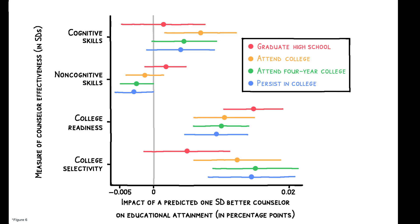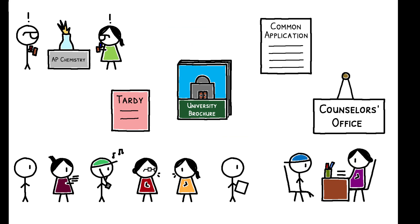Effectiveness in terms of college readiness and college selectivity is the most predictive of whether students graduate high school and attend college, which indicates that a key channel through which counselors increase students' educational attainment is by providing information about post-secondary education opportunities and directly lowering the barriers to accessing them.